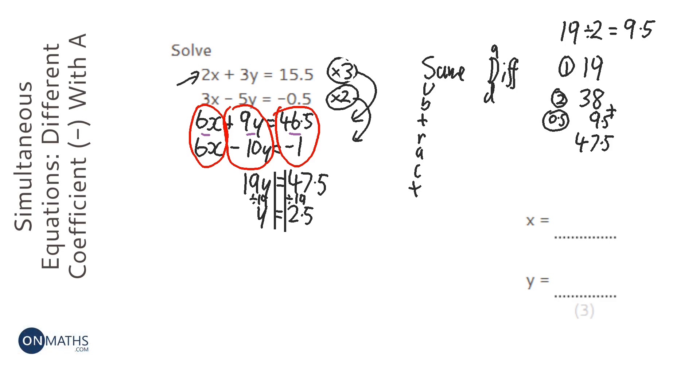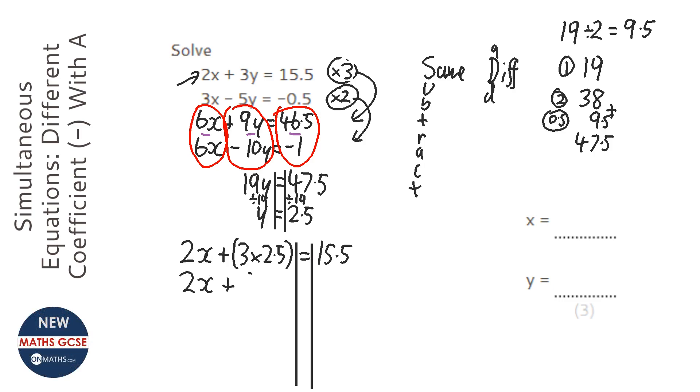Okay, so we're going to put the y back into the first equation. So this is going to be interesting. 2x plus 3 times 2.5 equals 15.5. Let's put our lines going downwards. So 2x plus 7.5 equals 15.5. We'll take away 7.5 from both sides. So we've got 2x equals—take away the 0.5 and it would be 15, take away the 7 would be 8. So we'll divide by 2 both sides, we've got x equals 4.